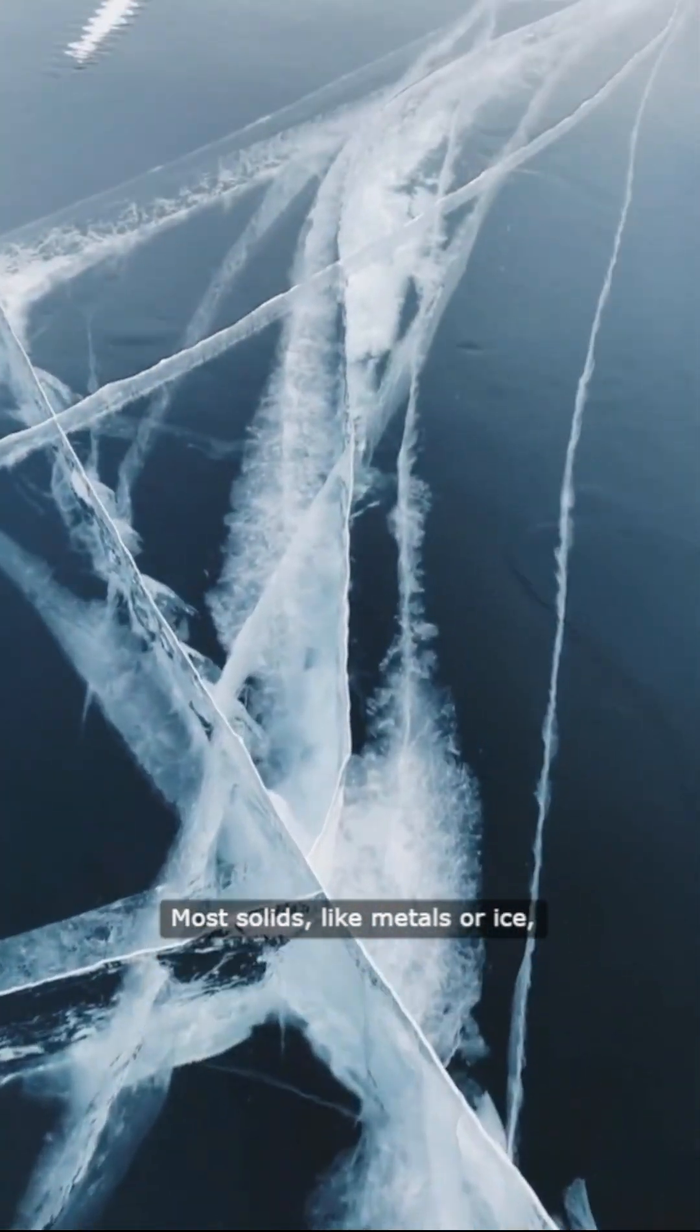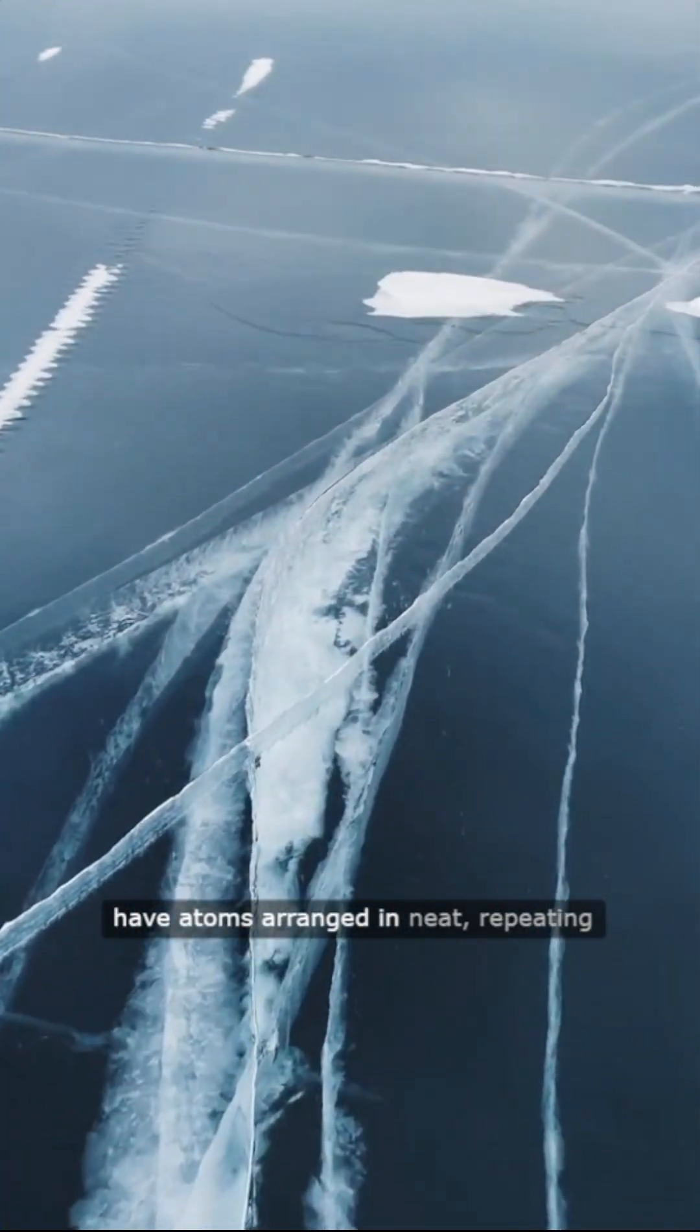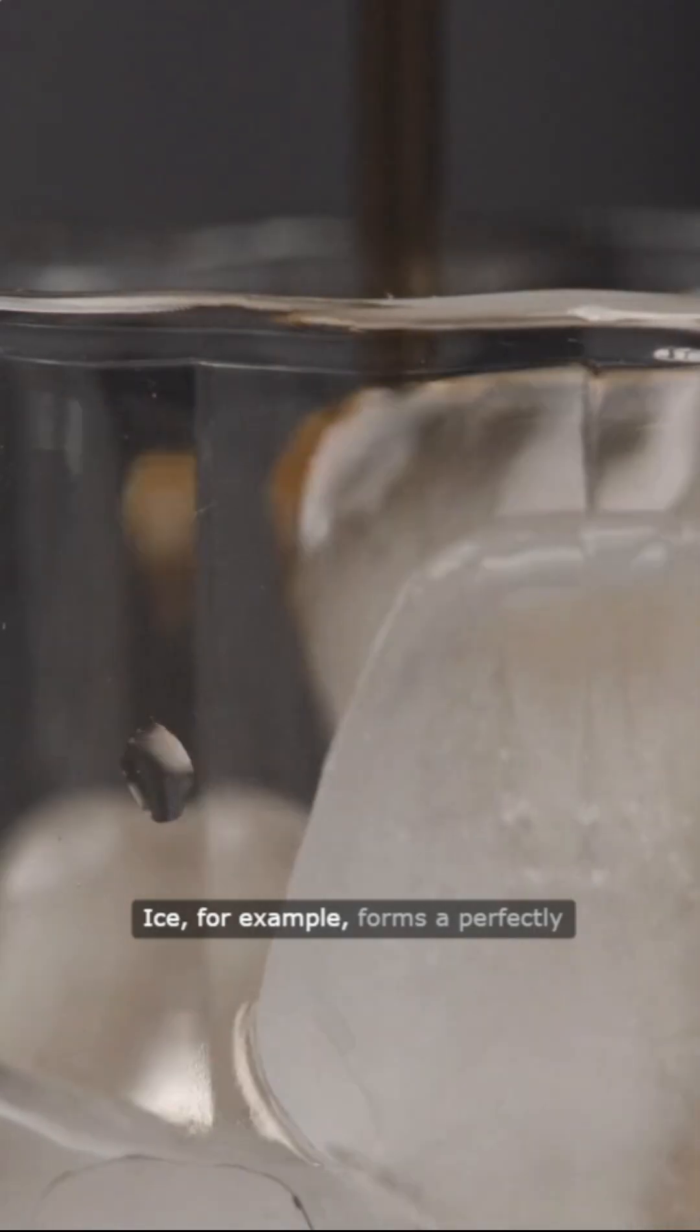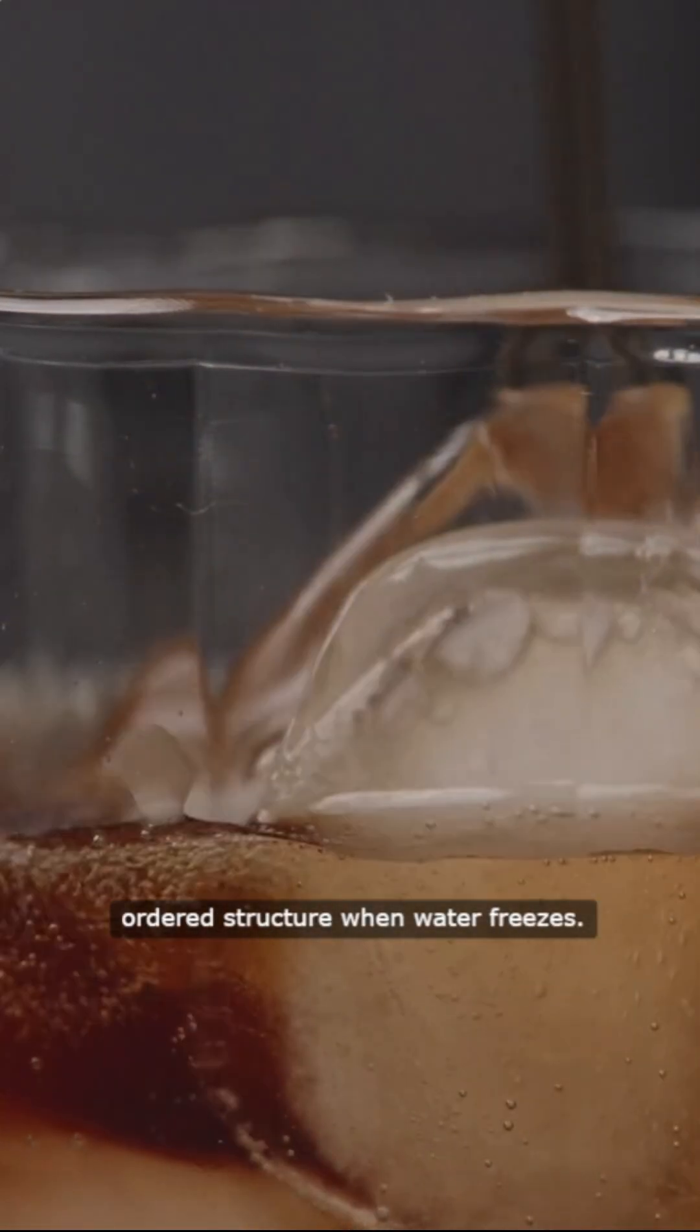Most solids, like metals or ice, have atoms arranged in neat, repeating patterns called crystals. Ice, for example, forms a perfectly ordered structure when water freezes.